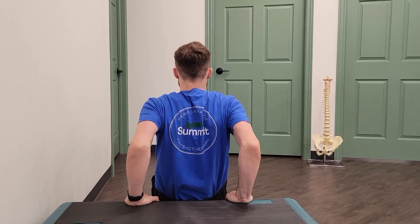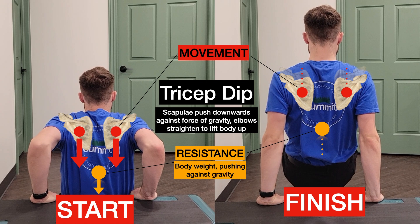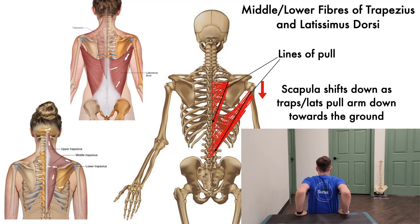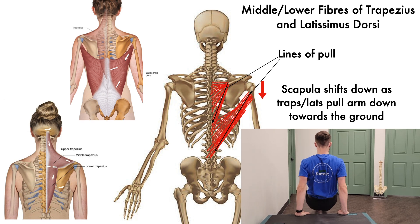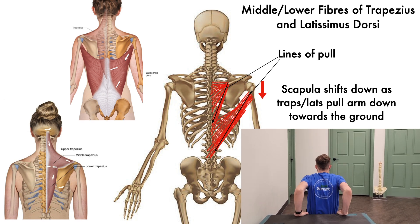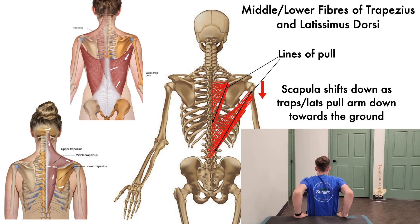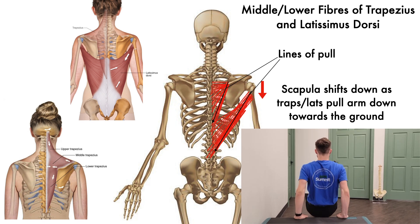The tricep dip, as the name suggests, also targets the triceps in the arm as the elbow extends or straightens to push the body up against gravity. It also includes the scapula pushing downwards simultaneously, training our movement of scapular depression. This means that the latissimus dorsi and lower fibers of trapezius are also going to be active here, helping the scapula move downwards, while the triceps work on straightening out the elbow to push the body upwards against gravity.